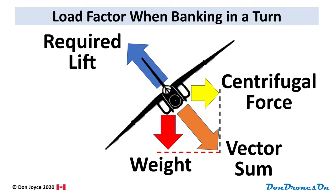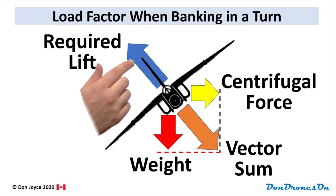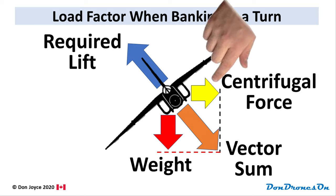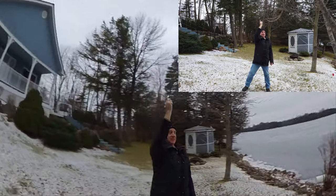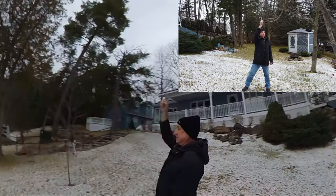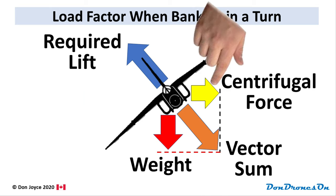Similarly, if the aircraft banks in a turn the load factor increases. The weight of the aircraft stays the same downwards, but the lift force of the wings must also counteract the centrifugal force pulling the aircraft outwards in the curve — just like the centrifugal force pulling outwards on this camera as it spins around. The string holding it is analogous to the lift force on the aircraft. In fact, the aircraft's lift balances the vector sum of the weight and centrifugal force.